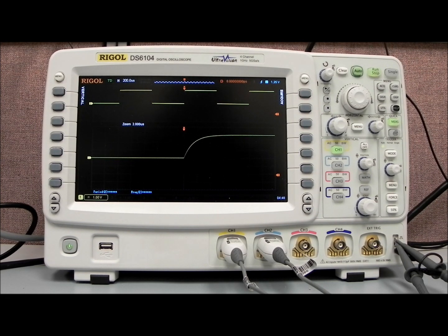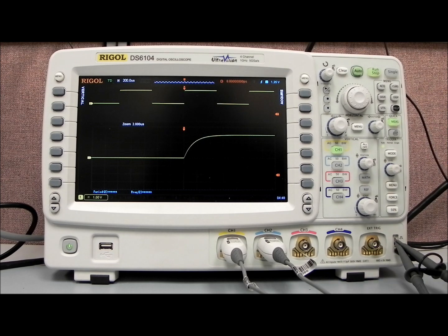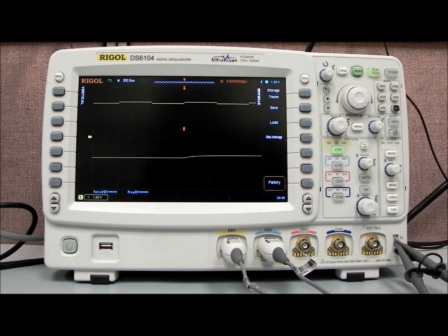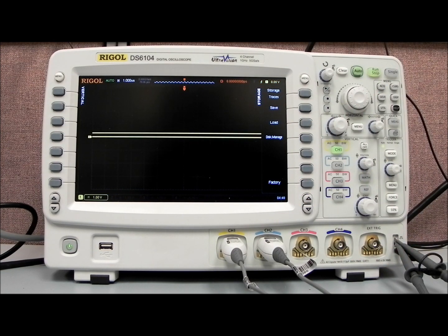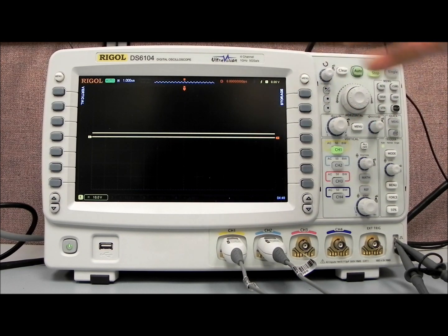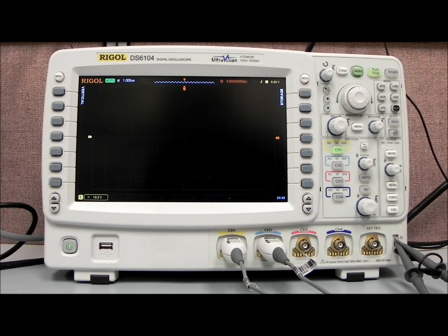Now I'd like to show off some of the measurement capabilities we have with the DS6000 series. I'm going to start by going back to factory defaults. Factory defaults are very easy to get to on the oscilloscope. You simply press the save button, and you'll see the factory key. Pressing factory, we'll go back to factory defaults. It'll clear all of our settings. If you ever get into a situation where things get a little bit confusing, you can always start back from the factory defaults. It's a nice way to get back to ground zero and then start doing your adjustments at that point.